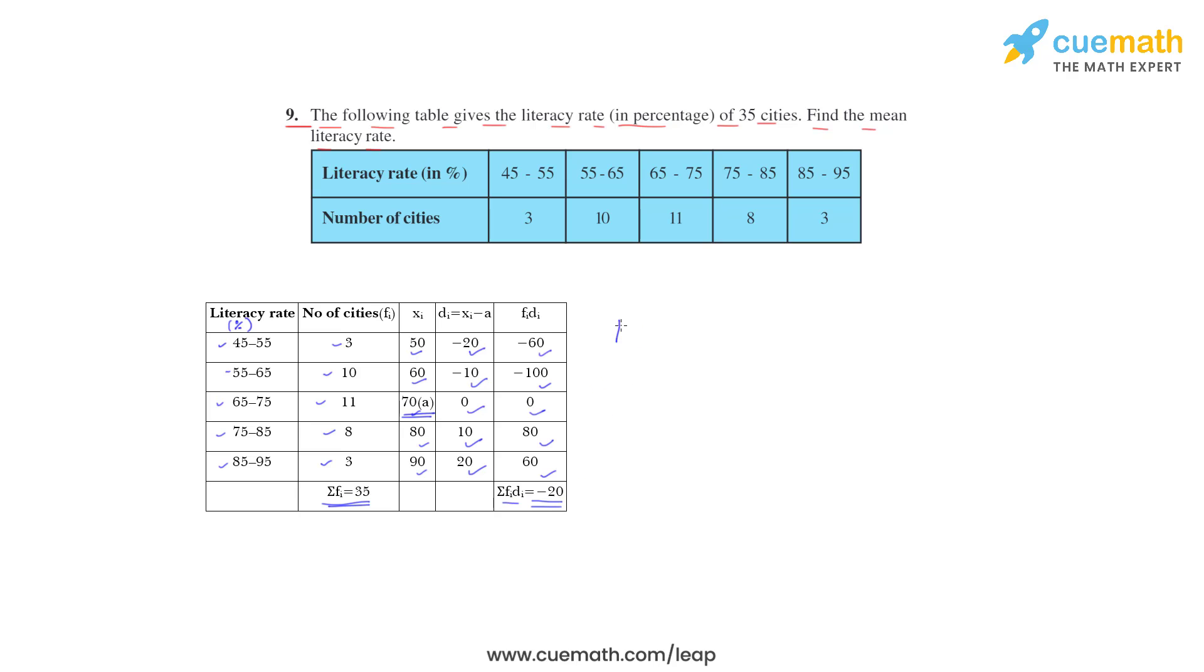Let's find the mean now. So we are using assumed mean method here. x̄ is equal to a plus Σfidi upon Σfi.